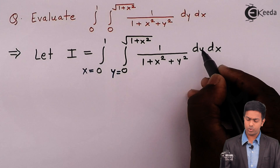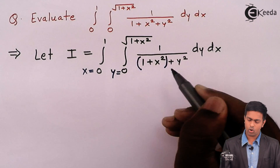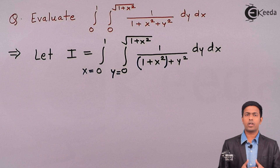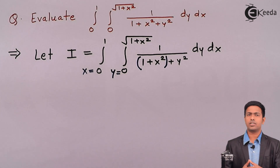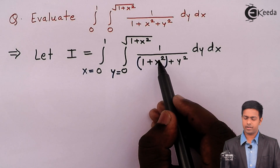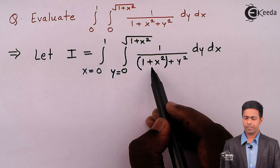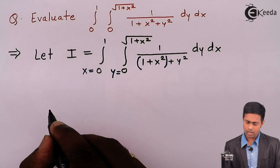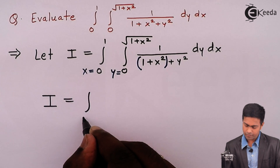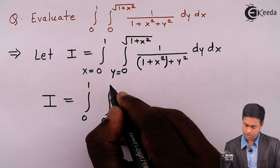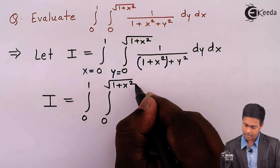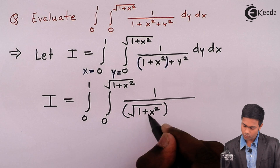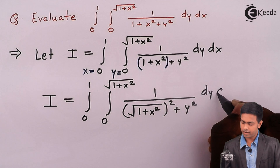To integrate with respect to y, I will treat 1 plus x square as a constant. This looks like the formula for integration of 1 upon a square plus y square, which is 1 by a times tan inverse of y upon a. Here a squared equals 1 plus x square, so a equals square root of 1 plus x square. I rewrite the integral as integration from 0 to 1 of integration from 0 to root of 1 plus x square of 1 over (1 plus x square plus y square) dy dx.